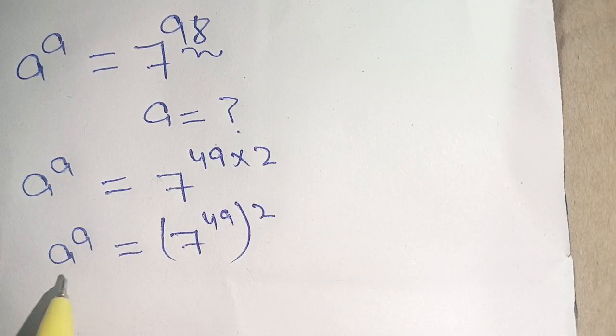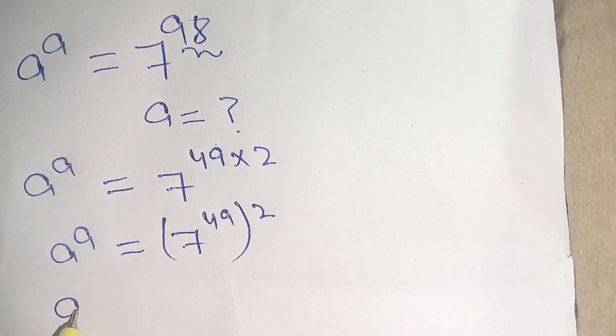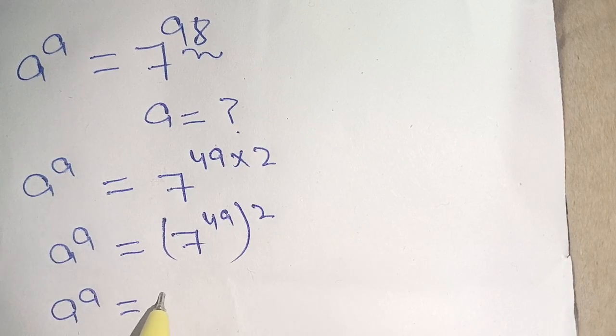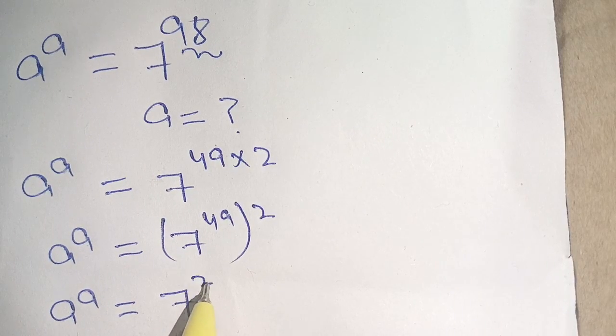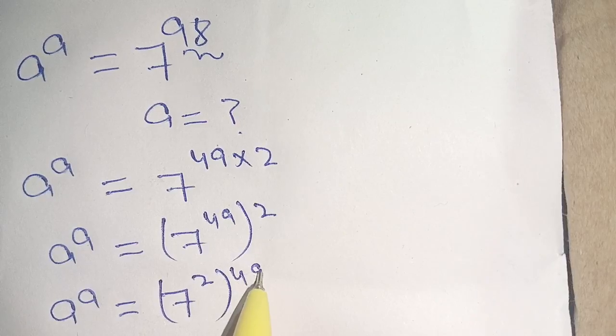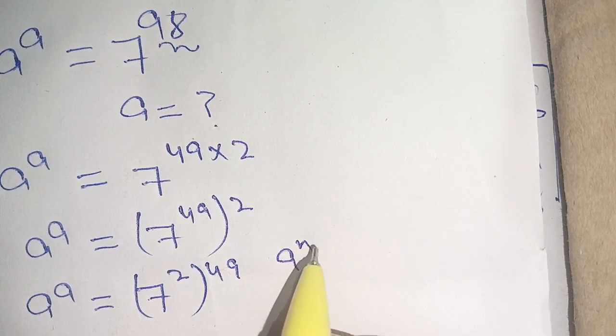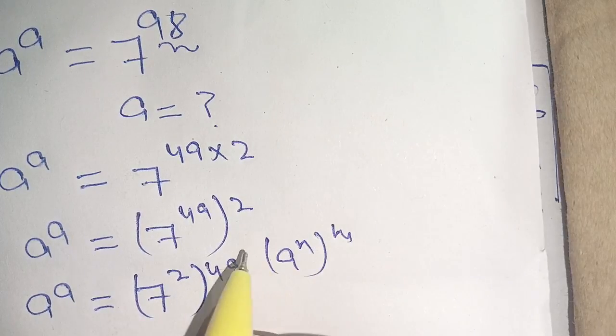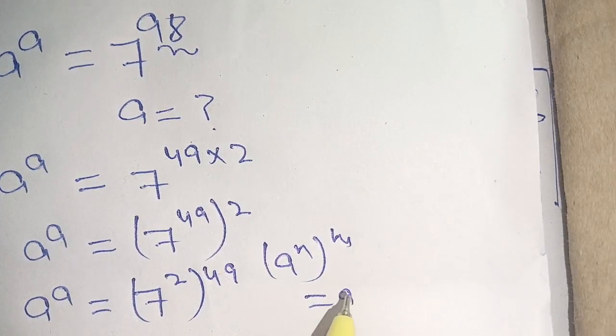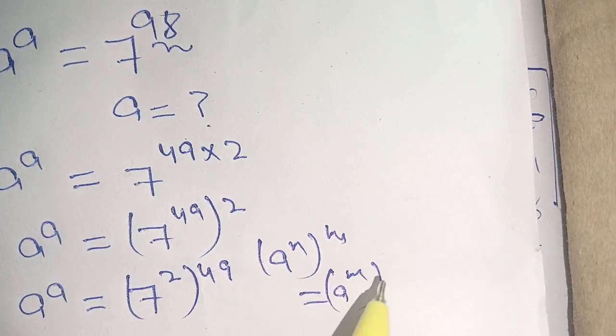Knowing the next step we can rewrite it as a raised to power a is equal to 7 raised to power 2 bracket power 49. By this identity if a raised to power n bracket power m then it is equal to a raised to power m bracket power n.